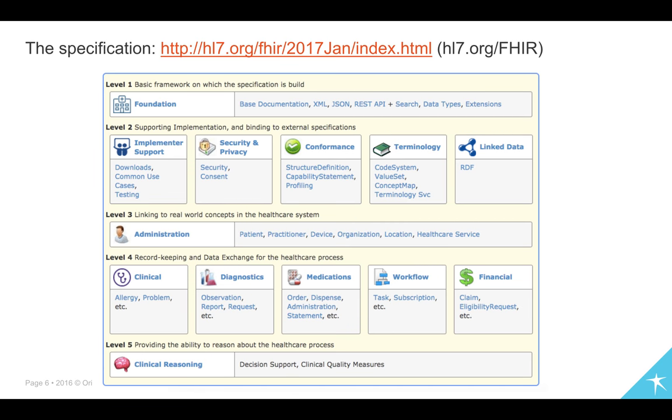Here's the specification. Now, this is actually the draft specification for version 3 of the spec. If you go there today, you will see version 2. But I'm showing you version 3 because we're literally only a couple of weeks away now from releasing that. And you can see the breadth. So if you start at the top there with what we call level 1, there's the basic framework upon which the specification is built. And that's where you have your documentation, the definition of how you actually represent resources, XML and JSON, the RESTful API, how to do search, the data types and extensions and so on and so forth. So they're the basics.